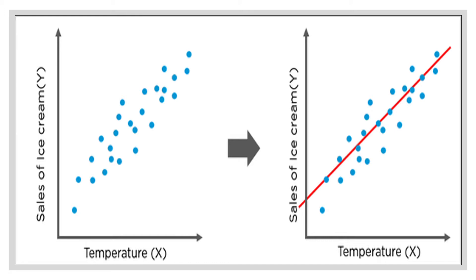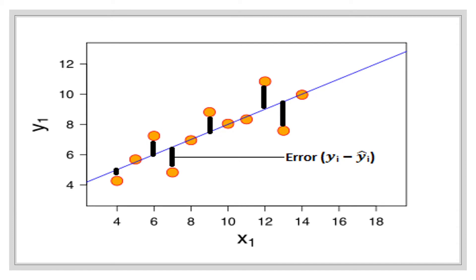While drawing the line of best fit, you should always keep in mind that this line should be drawn as close to the data points as possible. This is done in order to minimize errors. Error is basically the difference between the actual and the predicted value. This error can also be called a residual. In this figure, you can see that the orange circles represent your actual values, and the predicted values are the ones which are plotted on the line of best fit. An error is the difference between the two of them.